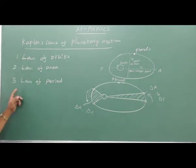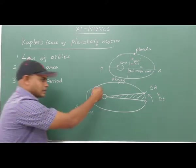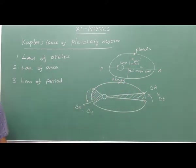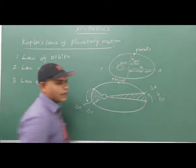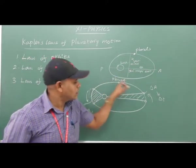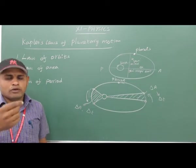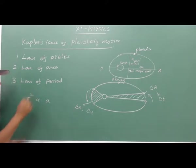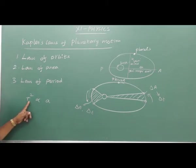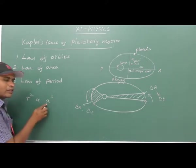The third law is the Law of Periods. The square of the time period of revolution of the planet around the sun in its elliptical orbit is directly proportional to the cube of the semi-major axis A. That is, T² ∝ A³.